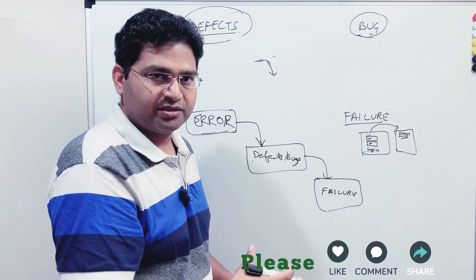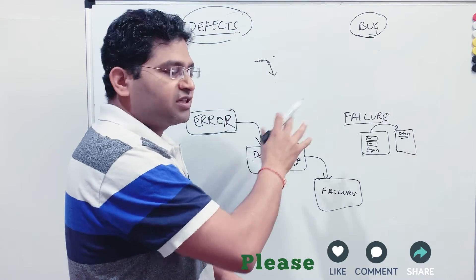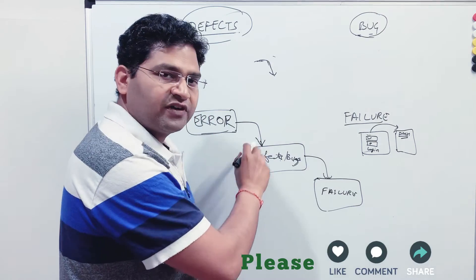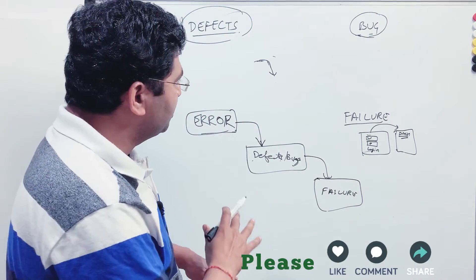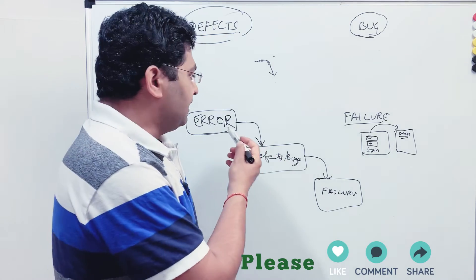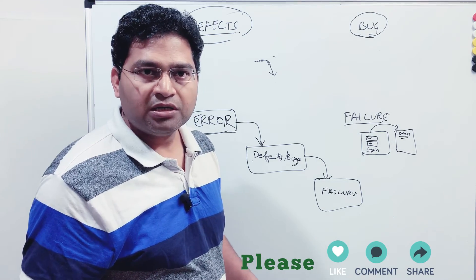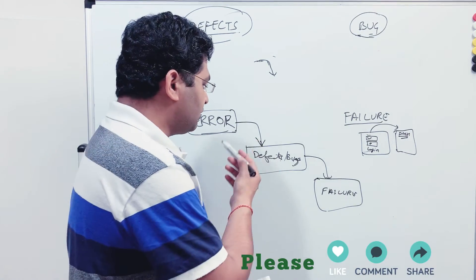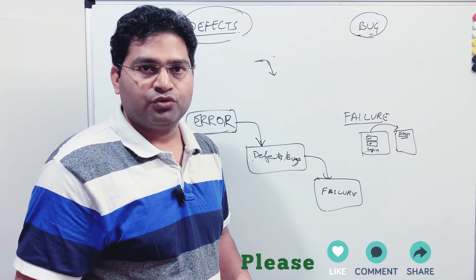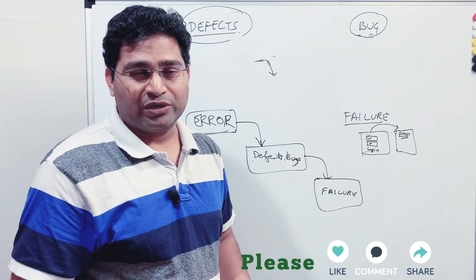This is the brief difference between defects and bug, and how defects and bugs are related — what error is, what failure is, and how error leads to defects and failures. I hope this is clear enough to understand the difference and explain it in an interview. That's all for this tutorial — thank you very much for watching.